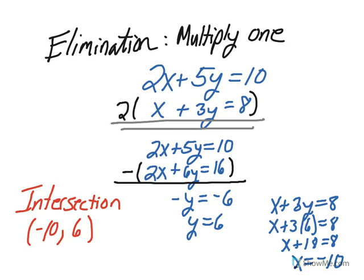So, our intersection point is negative 10 comma 6. Please pause the video and copy this into your notes. Thanks.